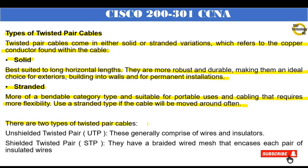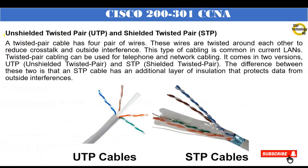There are two types of twisted pair cables: unshielded twisted pair (UTP), which generally comprises wires and insulators, and shielded twisted pair (STP), which has a braided wire mesh that encases each pair of insulated wires. A twisted pair cable has four pairs of wires twisted around each other to reduce crosstalk and outside interference. This type of cabling is common in current LANs.